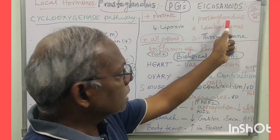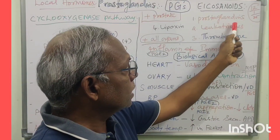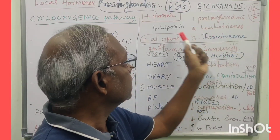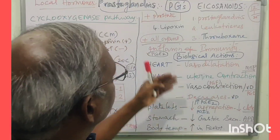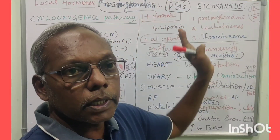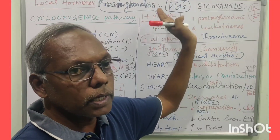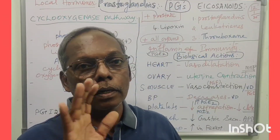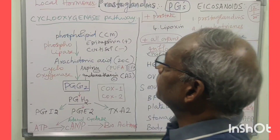The mnemonic is: Prostaglandins, Leukotrienes, Thromboxane, Lipoxin. Regarding Prostaglandins, they were first isolated from the prostate gland, but they are present in all organs.